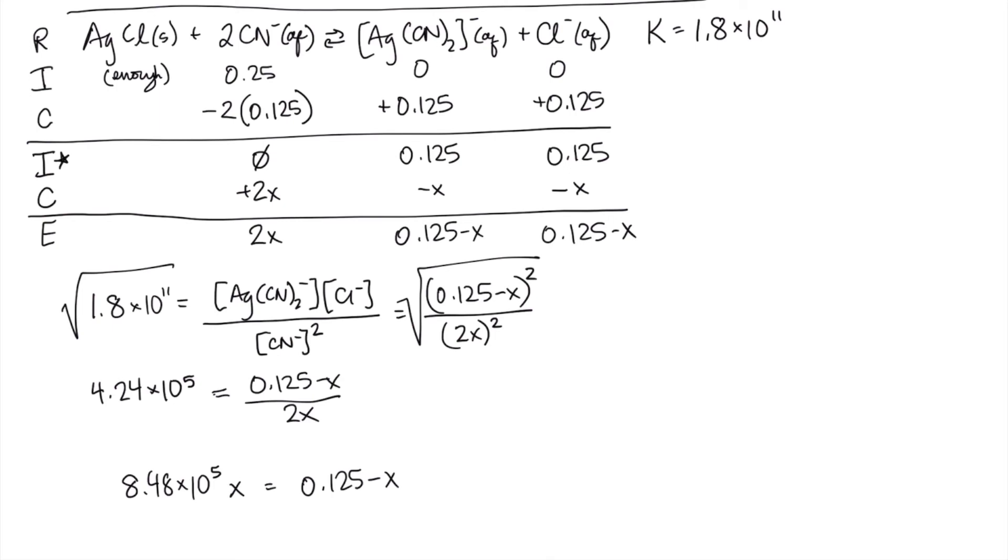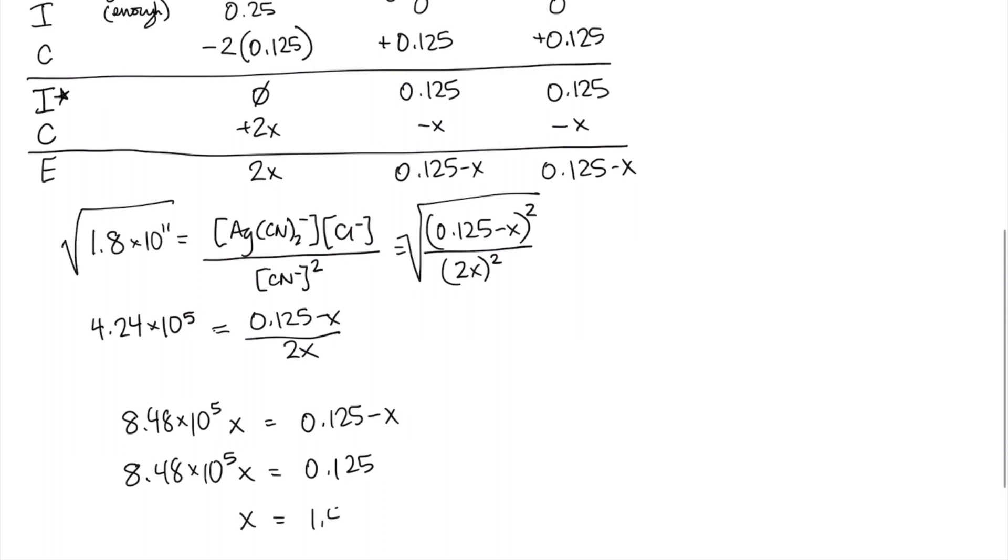I'm going to move our x's over to the same side. So I'm going to add x to both sides. We still have the same thing. 8.48 times 10 to the 5th x equals 0.125. And now I'm going to divide both sides by 8.48 times 10 to the 5th. And I end up with x equals 1.47 times 10 to the minus 7, which is indeed very small.